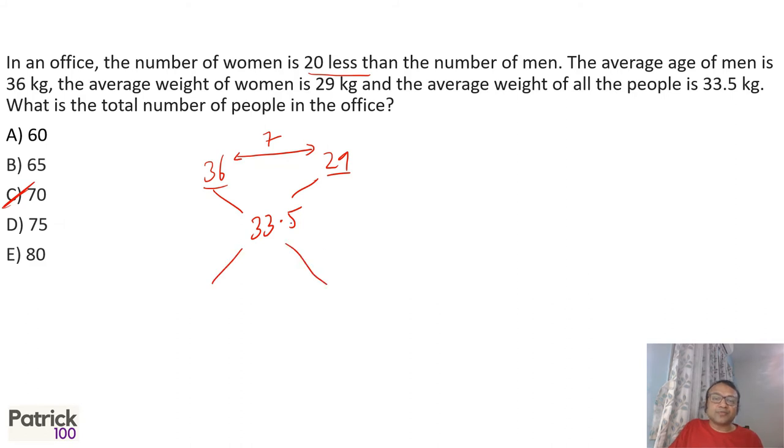Or you can do allegation. If you do allegation, this is 4.5, 2.5, which if you look at 45 is to 25, 9 is to 5. Now difference in 9 and 5 is 4, and the total is 9 plus 5, 14. But the difference is 20. Multiply by 5 to get 20. So 14 into 5, total has to be 70 people. C option.